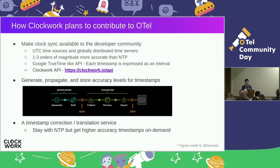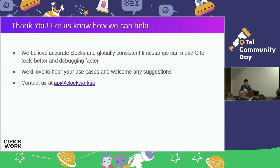A third idea is a timestamp translation service. It may be difficult for people to switch out NTP and use a different clock sync system, but we can do translation after the fact: run NTP as-is, collect whatever timestamps it provides, and when you want to analyze the traces, translate and get corrected timestamps on demand. In conclusion, at Clockwork we believe accurate clocks and globally consistent timestamps can make OpenTelemetry tools better and debugging much faster and easier. We'd love to hear your use cases and feedback. Thank you.